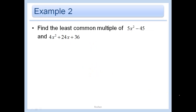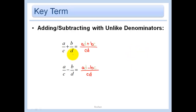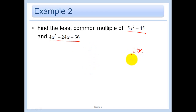In this problem, we want to find the least common multiple of 5x squared minus 45 and 4x squared plus 24x plus 36. Before I do this problem, I want to talk about what the least common multiple means. The least common multiple is how you usually get your common denominator. The least common multiple between 2 and 8 is just 8. The least common multiple between 4 and 6 would be 12. We can do these things in our head quite easily.